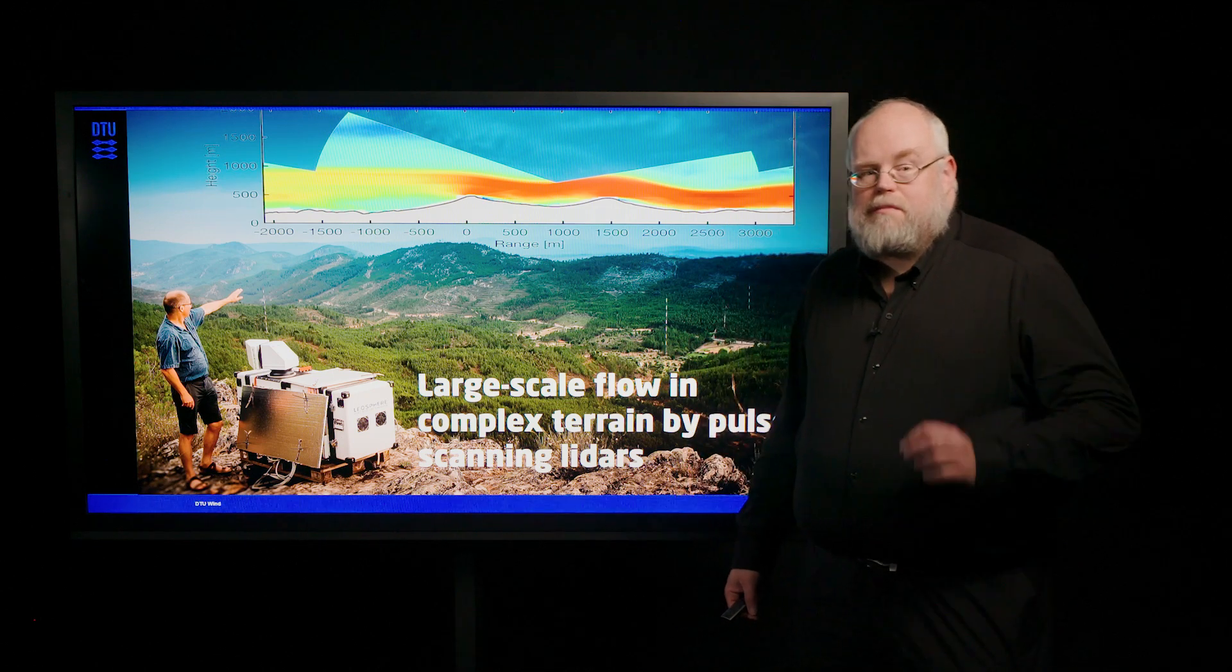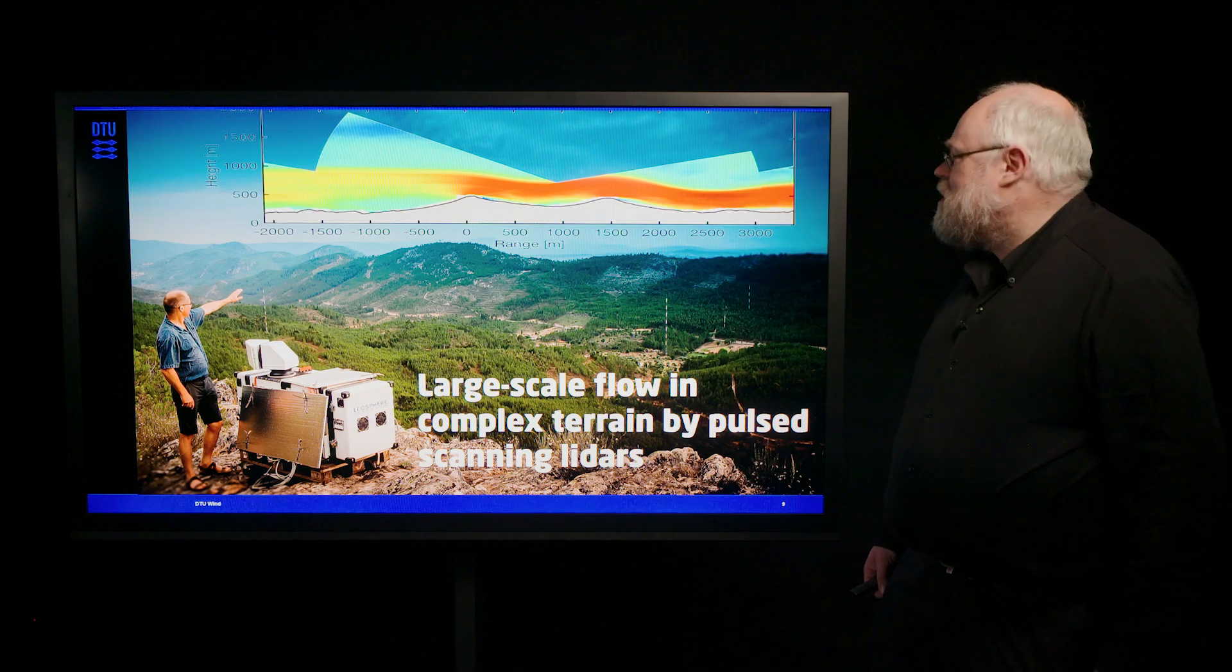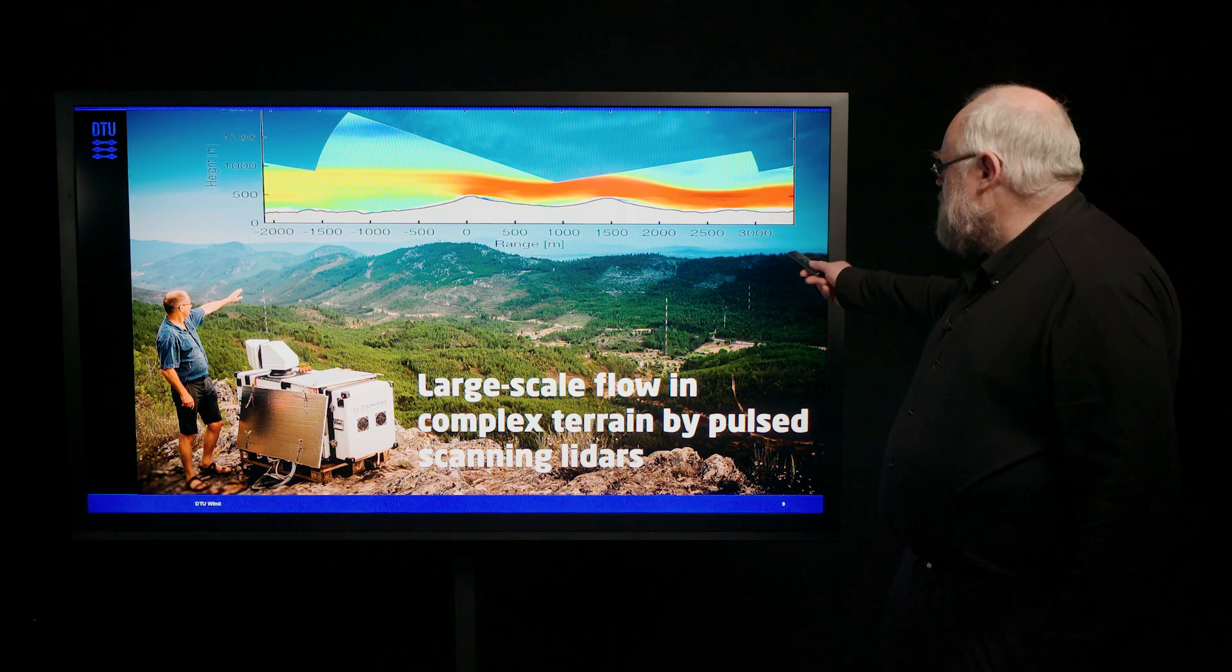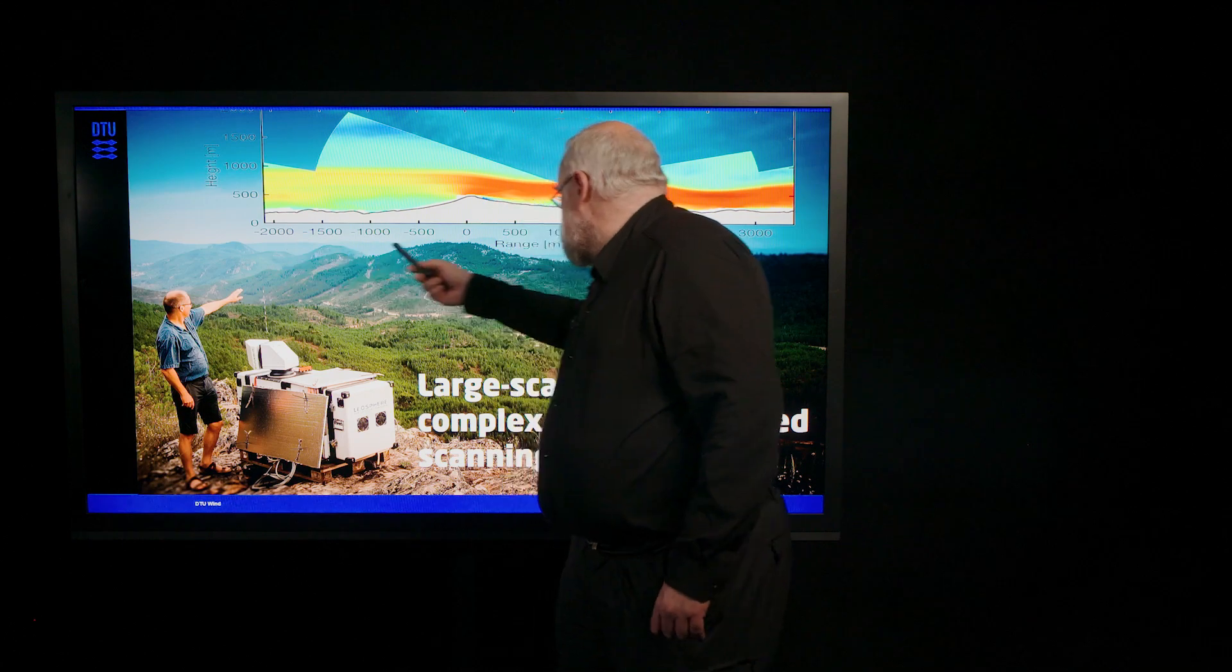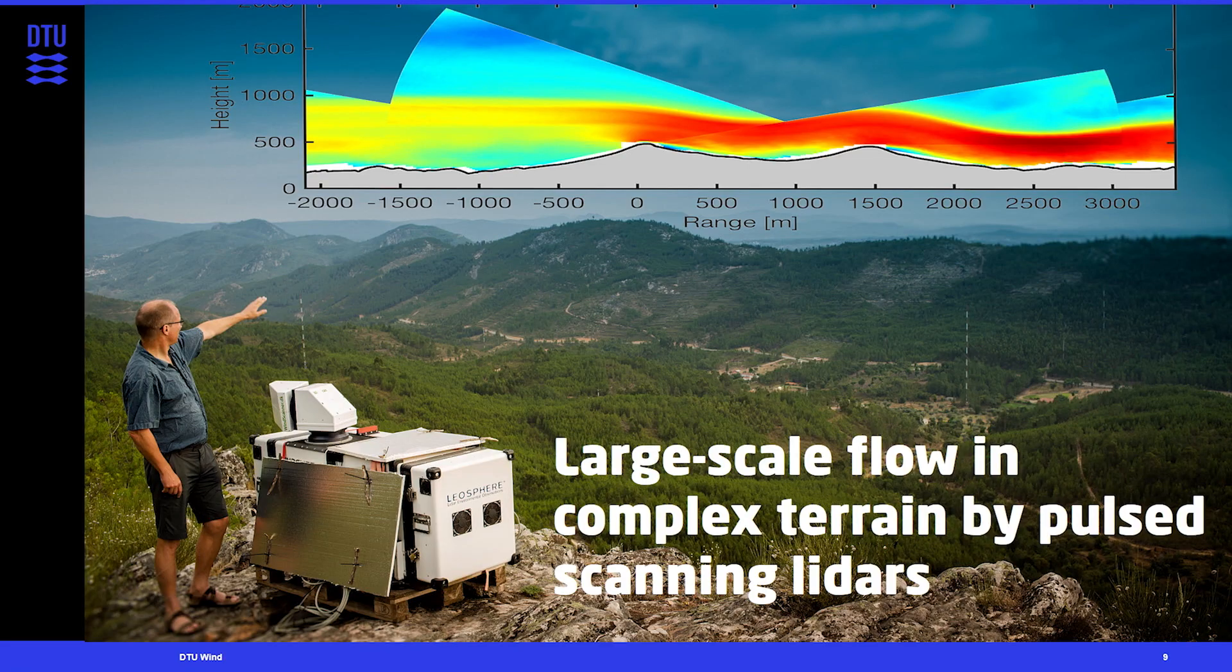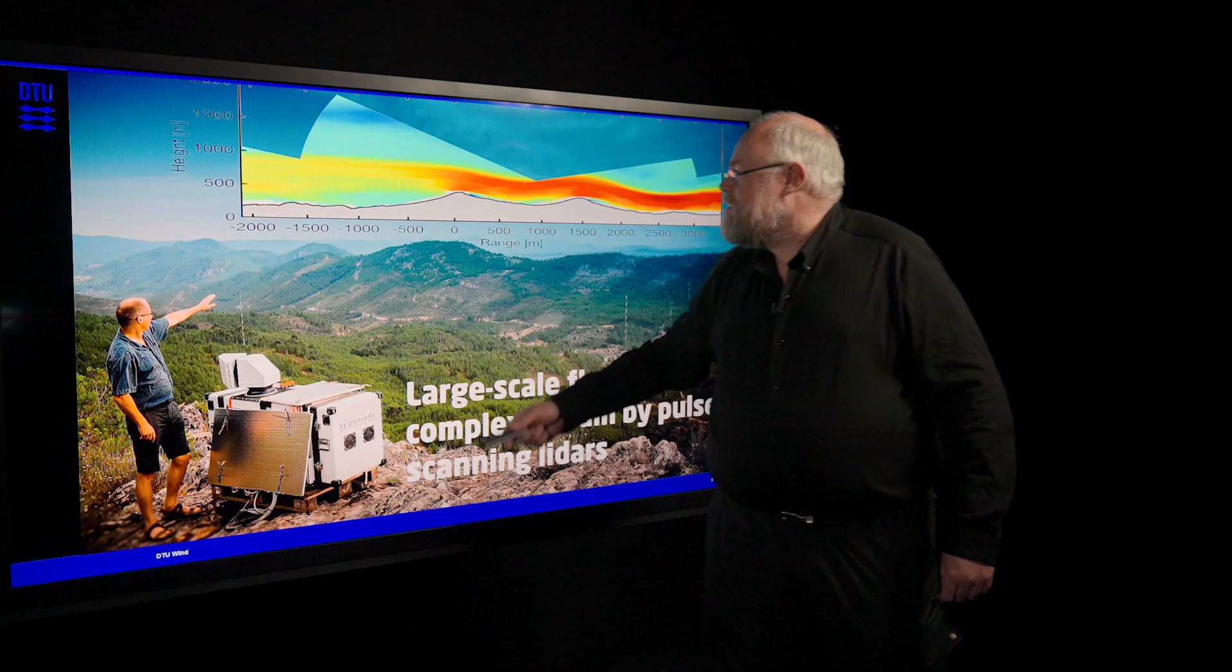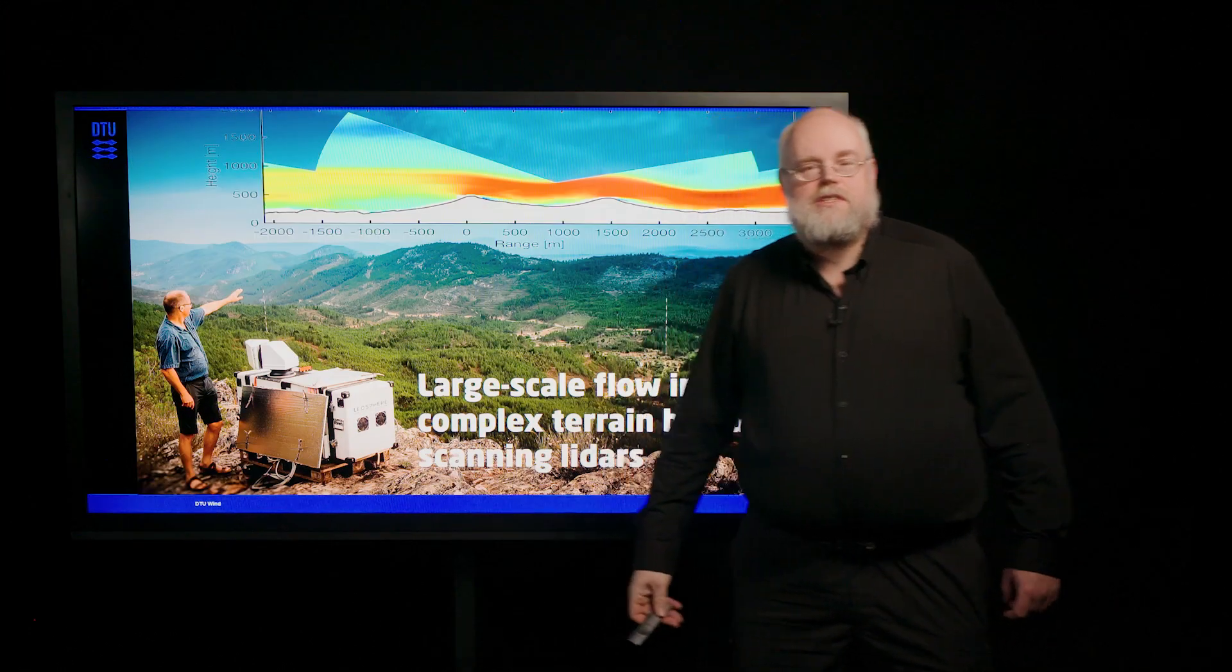But the pulse system has constant sampling volume all over. So you can use it at several kilometers. Here you have a range, actually ranging from minus 2,000 meters to 3,000 meters. So it's a distance of 5 kilometers over a valley in Portugal. And with an instrument, the pulse lidar system, that then can measure the flow in the valley between these ridges.